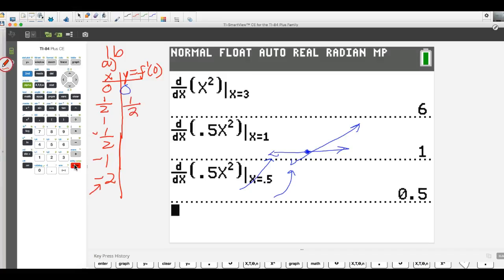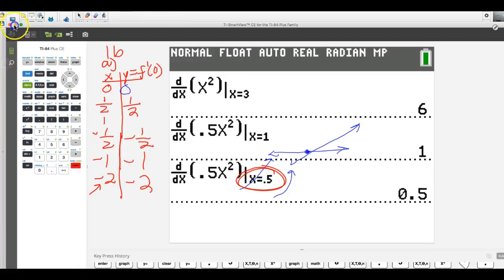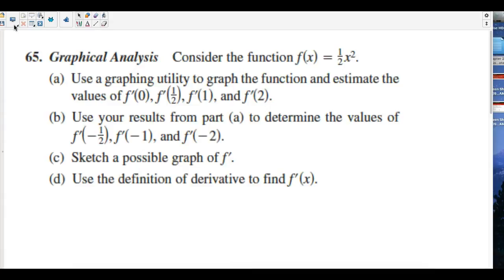Now, go test one more. Go do it at negative 2. So you guys go math 8 and enter a negative 2 right here for me and tell me what you get. Are you getting negative 2? So what's your guess for this one? Negative 1. Yep. And negative 1 half. It appears like the derivative is y equals x. Would you agree with me? Looks very much like I'm getting that x value right back at me. So let's go back and finish off number 65.